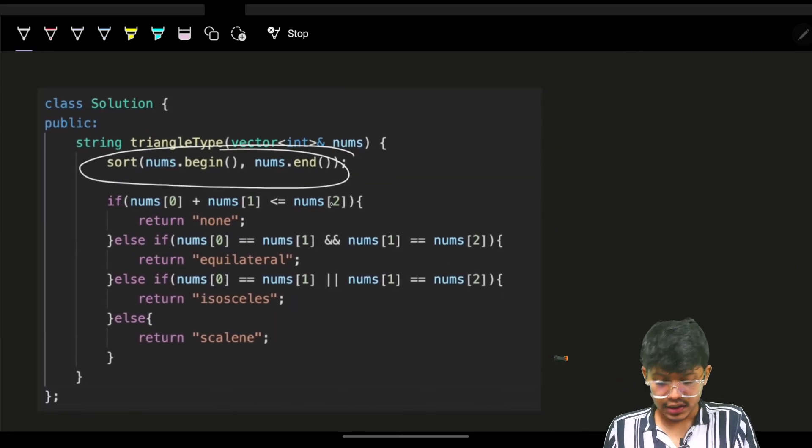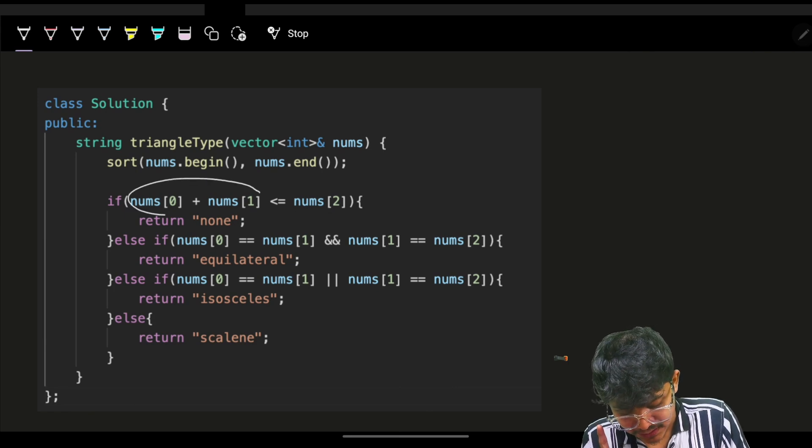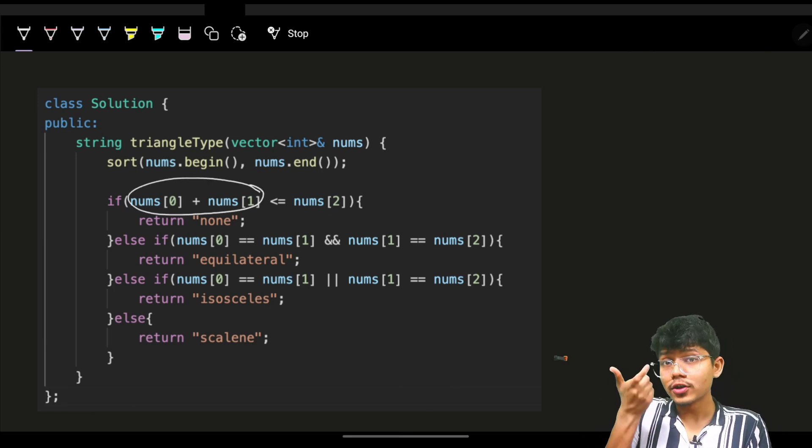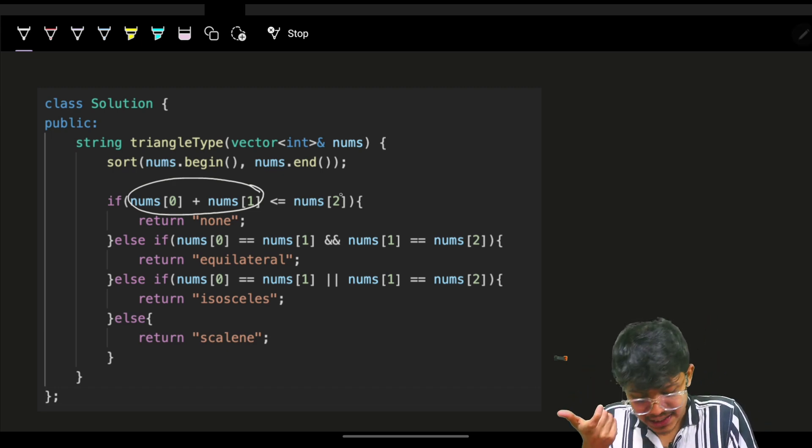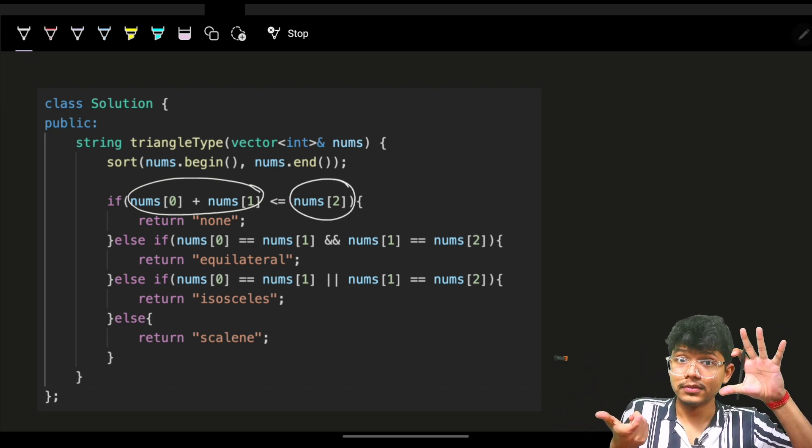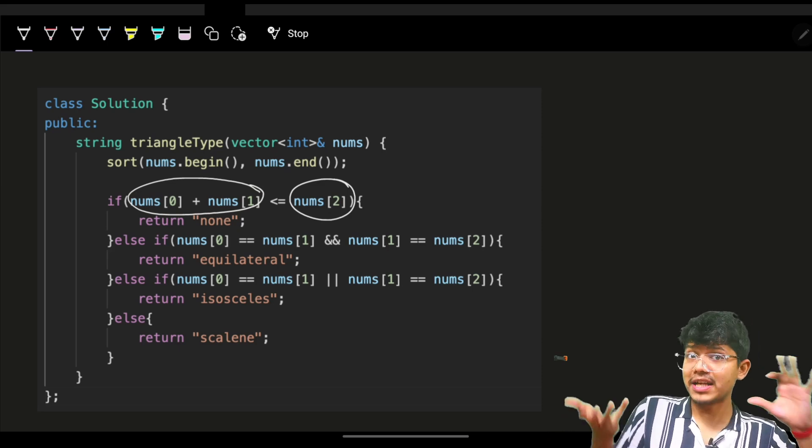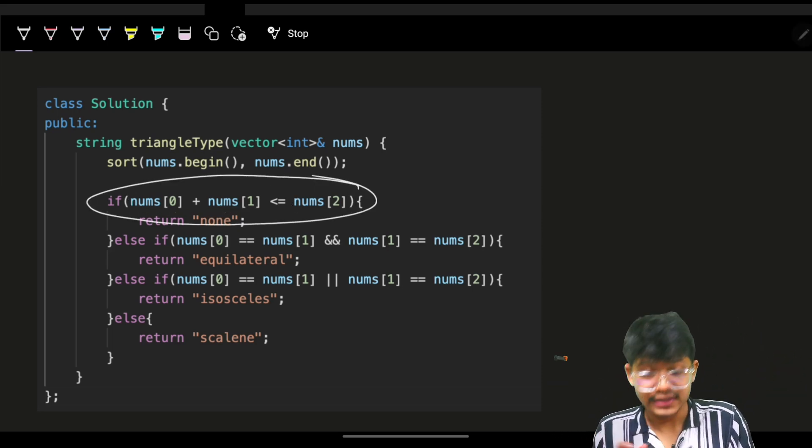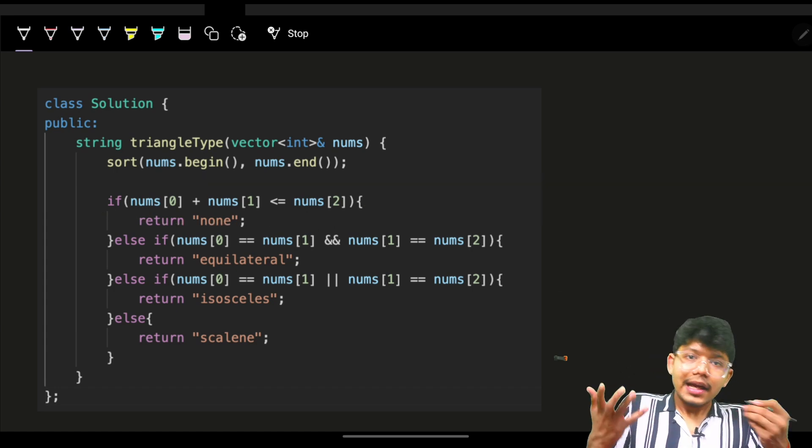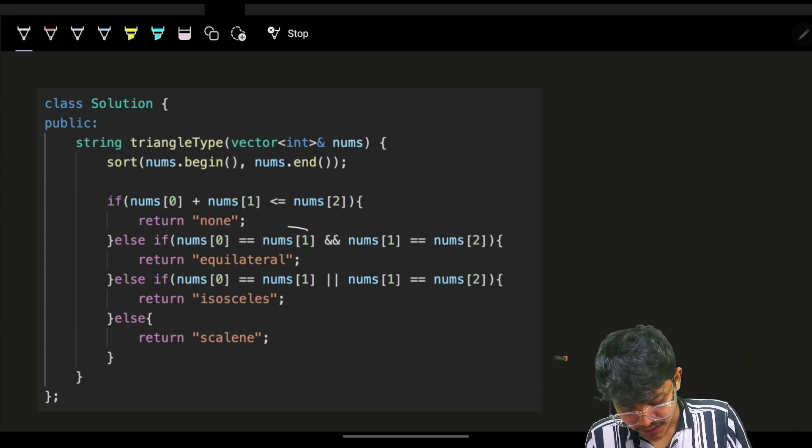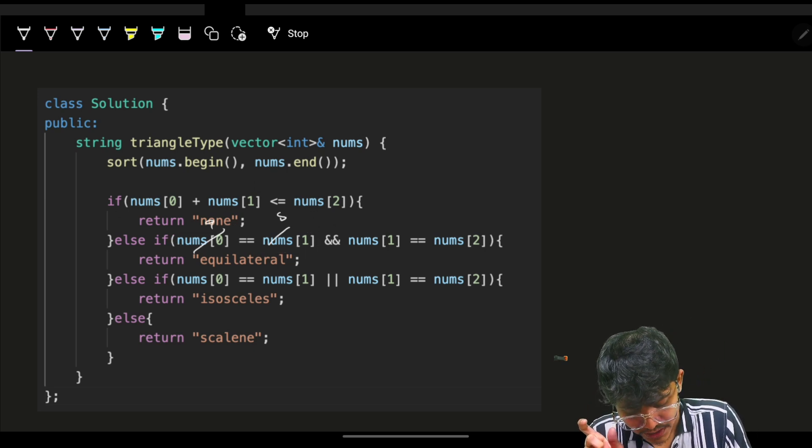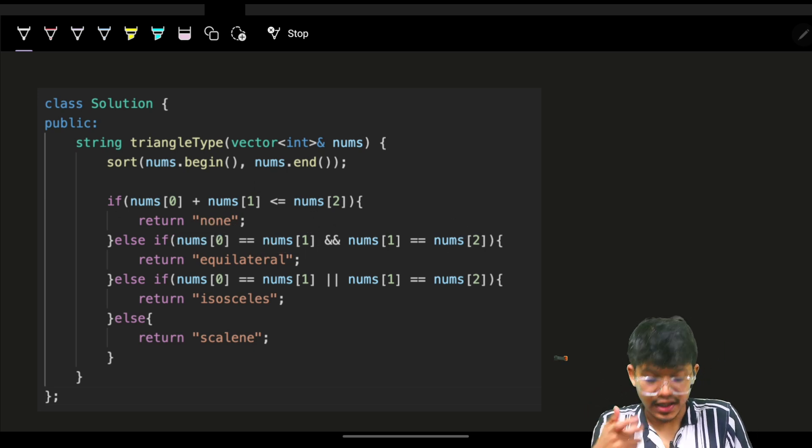So I will just simply show this exact same code. Firstly, I will simply sort it down. Then I will simply compare, sum of the minimum two sides, like lengths of my triangle. If it is less than equal to my third side, which is the maximum, which is the best possible case. If this is also less, then for sure answer is none. If not, then if all three are equal, which means A is equal to B, B is equal to C, then the answer is equilateral.